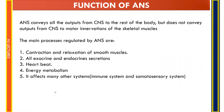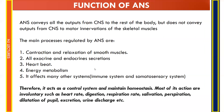The autonomic nervous system conveys output from the CNS to the rest of the body, but not to skeletal muscle motor innervation. Main processes regulated by ANS include contraction and relaxation of smooth muscle, exocrine and endocrine secretion, heartbeat, and energy metabolism. It also affects the immune and somatosensory systems, acting as a control system to maintain homeostasis. Most actions are involuntary, such as digestion, respiratory rate, salivation, perspiration, pupil dilation, and urine discharge.